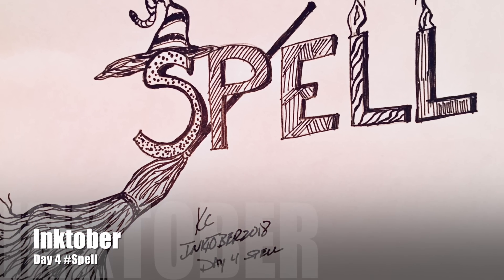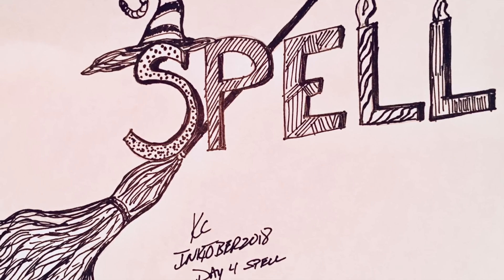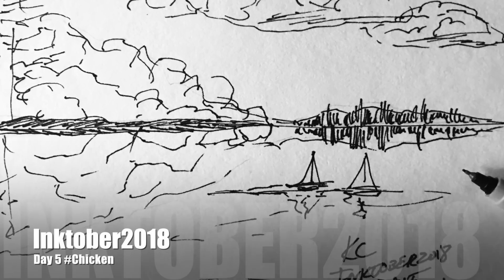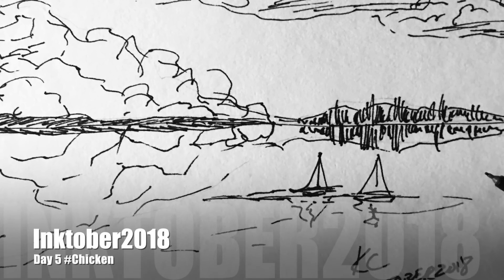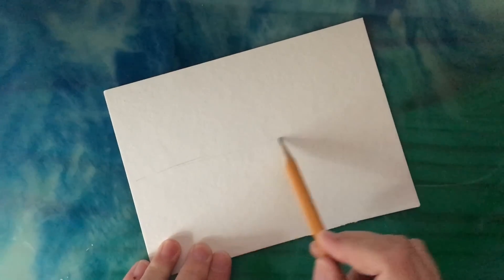So for day four, I did spell, I forgot to film it. Well, I didn't forget. I had my camera on, but it was not filming. So I missed the whole thing, but it was real basic and that one was just out of my head. I really didn't know what to do for that day. So I just kept adding the things. I started with the word spell and then I worked from there.